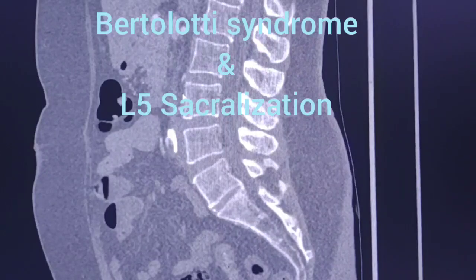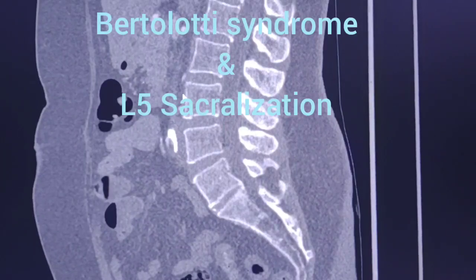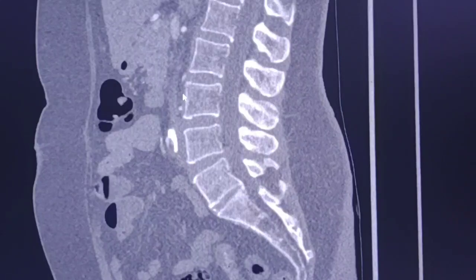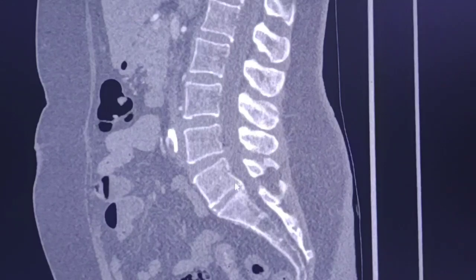Dear friends, hello. Today I would like to analyze and discuss a very common finding which is underestimated in terms of the source of pathogenesis, the cause of symptoms and the cause of complications. And this is the lumbar sacral transitional vertebra or the sacralization of the L5 vertebra.